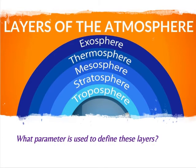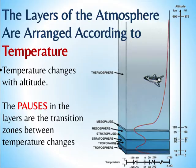The layers of the atmosphere, starting from Earth's surface moving toward space, are: troposphere, stratosphere, mesosphere, thermosphere, exosphere. Make sure you know them in order. The parameter used to define these layers is temperature. Temperature changes with altitude, and so does pressure. Whereas pressure is a steady decrease as you increase altitude, temperature is more complicated — it both increases and decreases depending on which layer you are in.